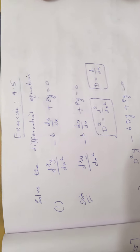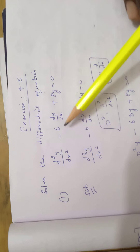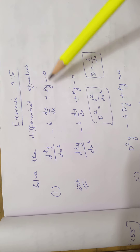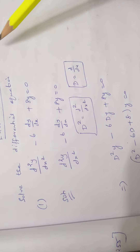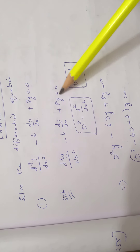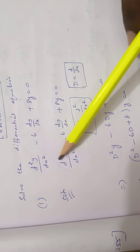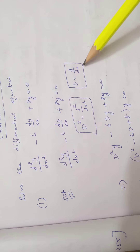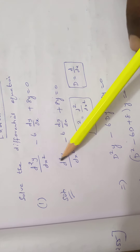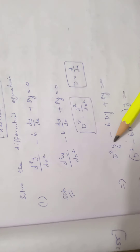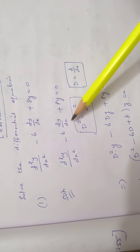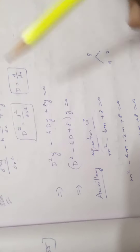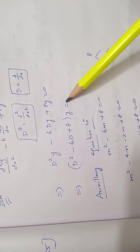Exercise 4.5, Problem 1. Solve the differential equation d²y/dx² - 6·dy/dx + 8y = 0. The solution: convert d²y/dx² as D² and dy/dx as D, where capital D means d/dx. So the equation becomes D²y - 6Dy + 8y = 0. Taking y as common: (D² - 6D + 8)y = 0.